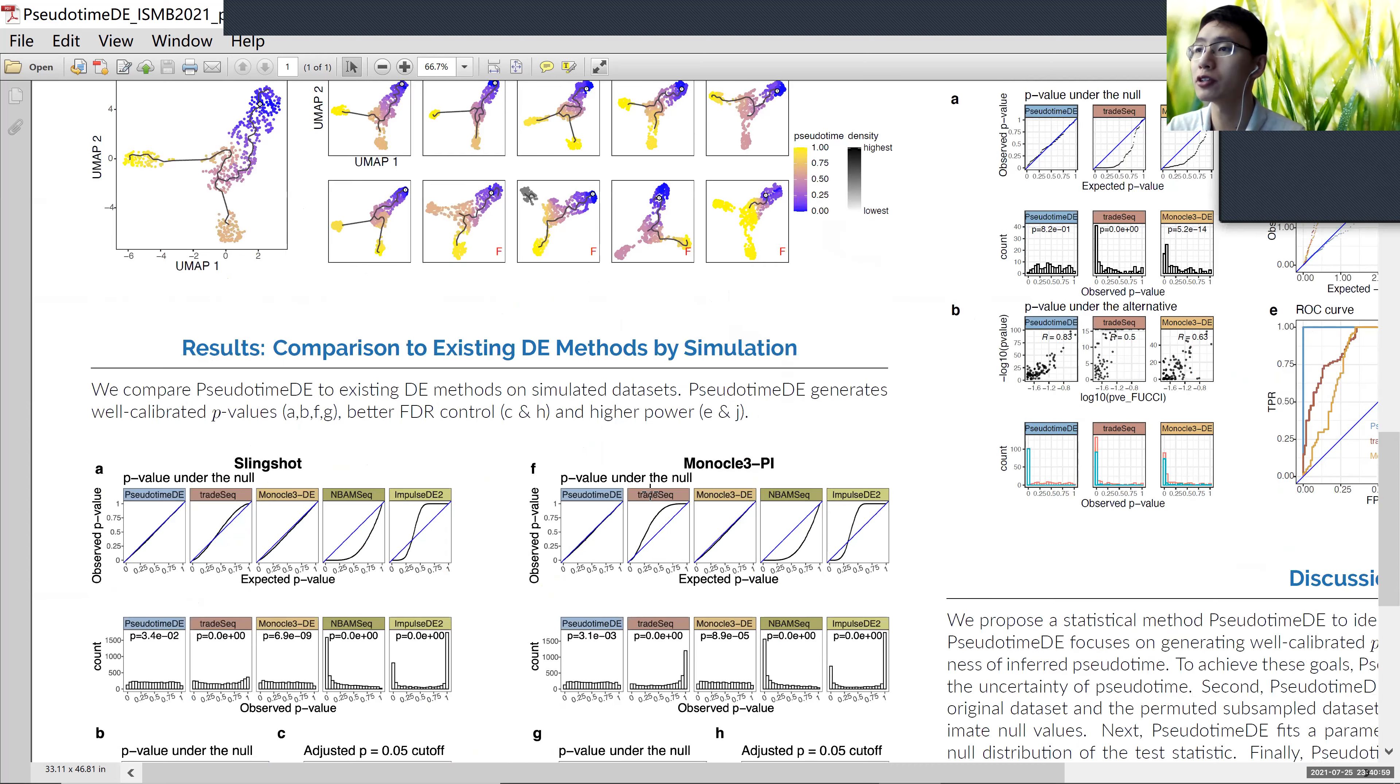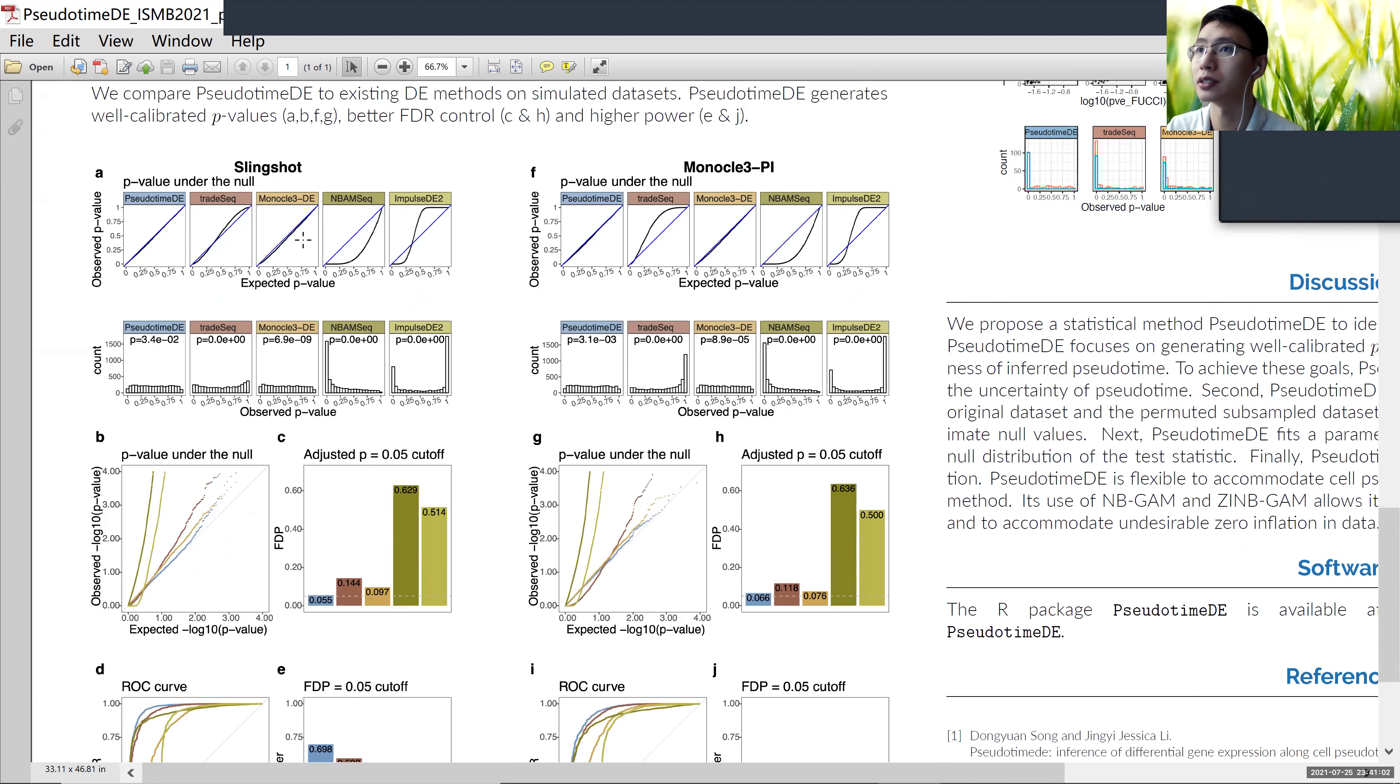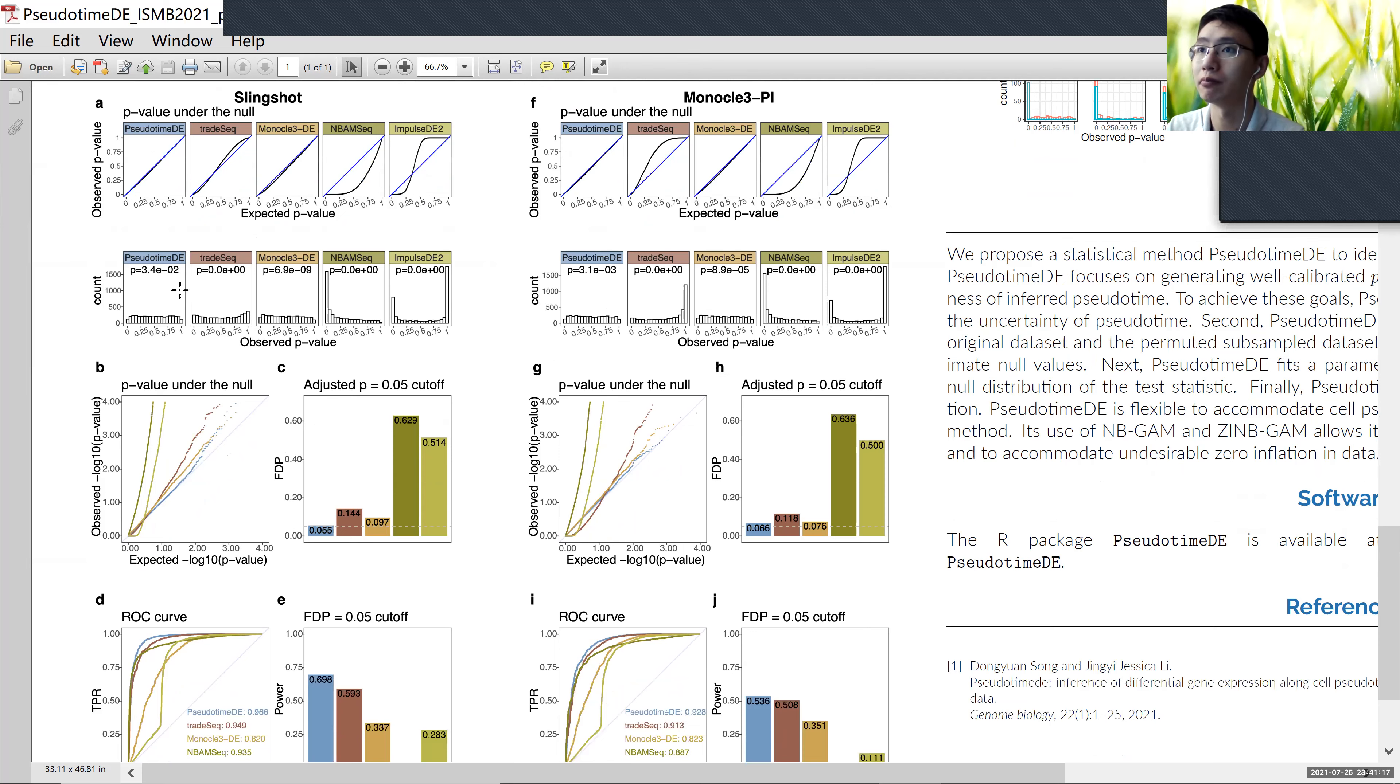We first benchmark our method against other single-cell DE methods or bulk RNA-seq DE methods with two different pseudotime inference methods on simulation data sets. First, we show that our p-values are much better calibrated.